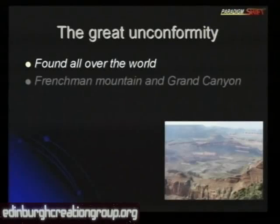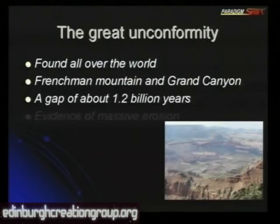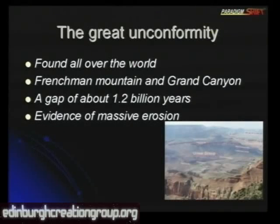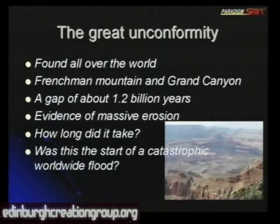The great unconformity at the base of the Cambrian occurs all around the world — at Frenchman Mountain, the Grand Canyon, and many other places. It represents a gap of about 1.2 billion years on the geological time scale. There's evidence of massive erosion: if there was any rock there, it's all disappeared, leaving a flat layer with sedimentary rock deposited on top. This suggests it may have happened very quickly during a catastrophic worldwide flood, consistent with a biblical flood event.